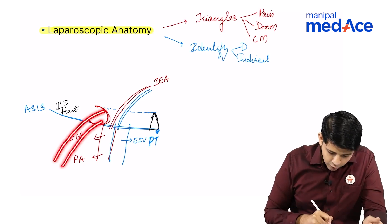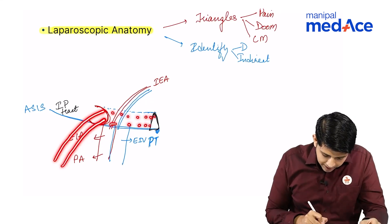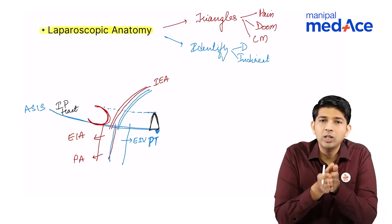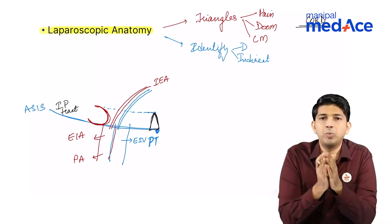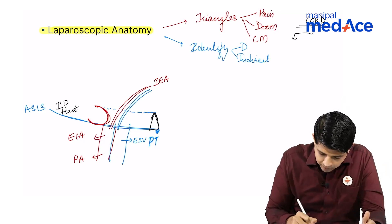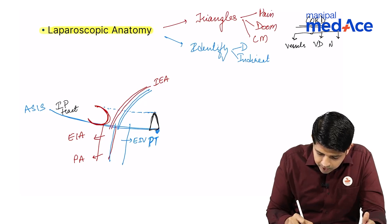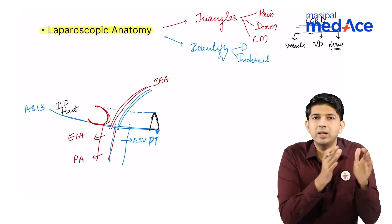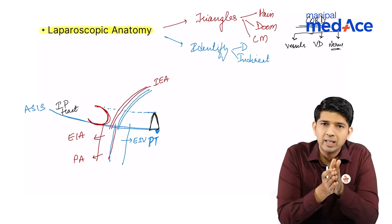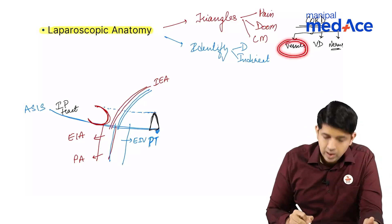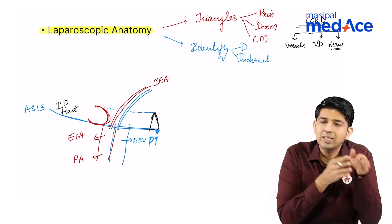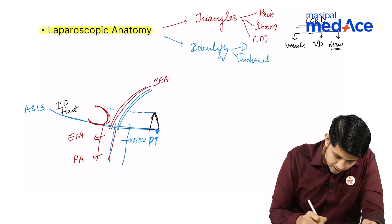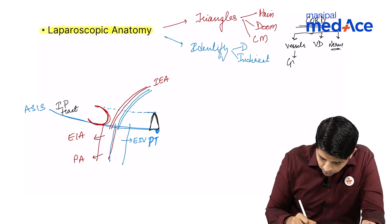Cord structures are going to enter the deep ring, go through the inguinal canal, and then exit outside. Cord structures are made up of three basic structures: blood vessels, vas deferens, and nerves. Blood vessels means your testicular artery, pampiniform plexus or veins — essentially vessels that supply the gonad. So we are going to call them gonadal vessels.